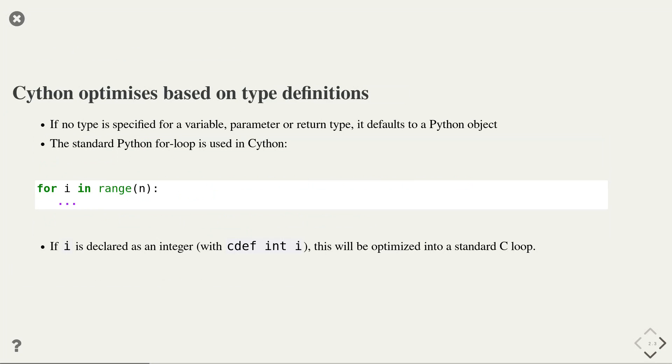For example, the foo function takes an integer and a string, which in C is represented as a pointer to a character array. You can also specify the type of the returned variable; in this example the function returns an integer. The majority of the optimization that Cython can perform is based on the type definitions that you provide as a programmer. If your Python code does not specify any type for a variable, for a function parameter, or for a return type, then Cython simply defaults to a Python object and the speed gain will be very limited.